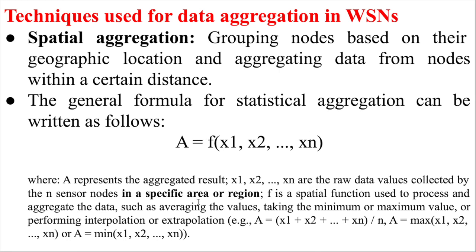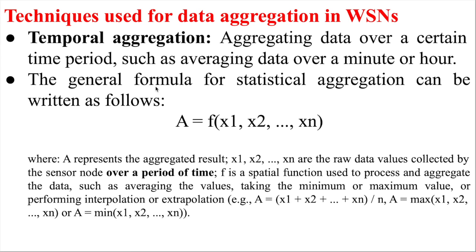For spectral aggregation, you can take the average, minimum, or maximum values. For example, for noise level in a building, whatever the maximum noise is, that is the noise level for the building — we are not worried about the low-noise environment. But for temperature in winter, the minimum temperature noted by sensors is what's useful. So minimum and maximum are the types of approaches used in spectral aggregation.